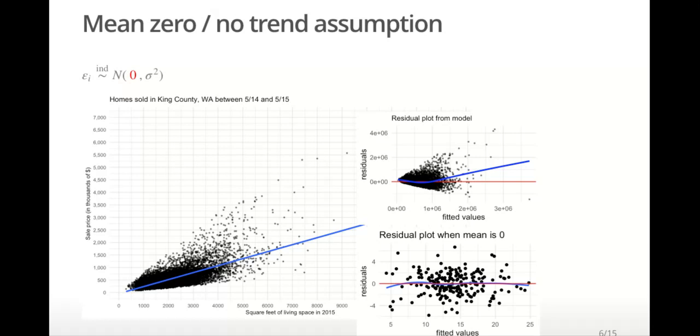Violations of the mean zero assumption can often be fixed by transforming the predictor variable or variables. In simple cases, adding one or two higher level polynomial terms may fix the problem.